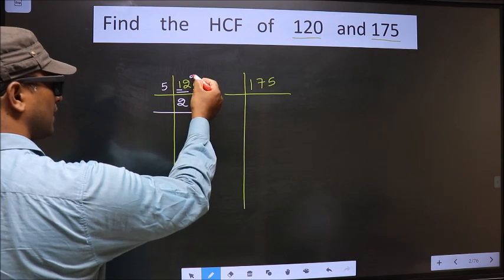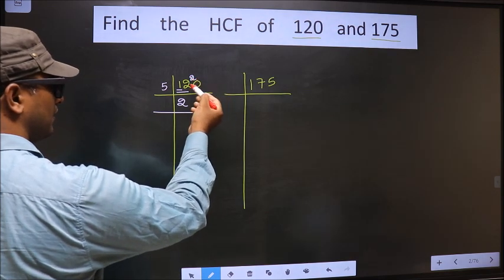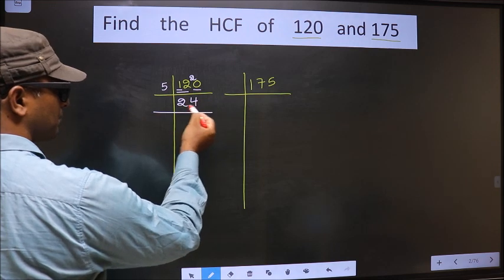12 minus 10 is 2, 2 carried forward making it 20. When do we get 20 in the 5 table? 5 times 4 is 20.